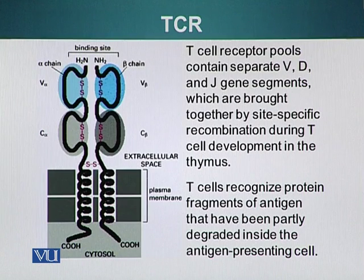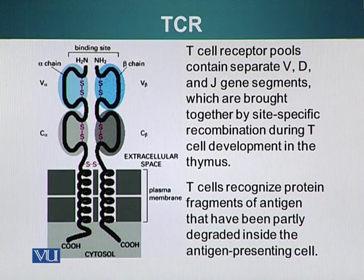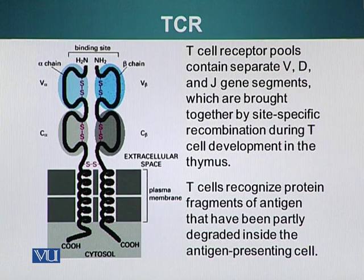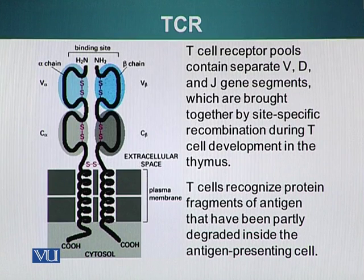Since TCRs must recognize many different antigens, we need large diversity of these molecules. The diversity of TCR molecules is generated by a similar process to what we saw in B cell receptors — where the variable region is assembled by joining different gene segments, resulting in diversity of antibody molecules. T cell receptors go through the same process, joining different V, D, and J gene segments, and their rearrangement occurs at the DNA level.